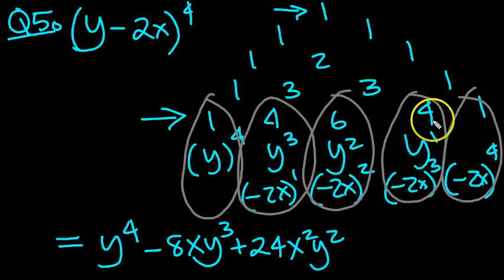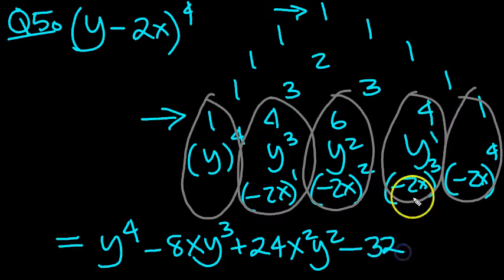Next one, we've got a minus 2x cubed, so that results in a minus 2 cubed. So we'll get a minus here. 2 cubed is 8. 8 times 4 is 32, so the number is 32. We've got an x cubed that will come out, haven't we? And we've got a y, and it's a single power y.